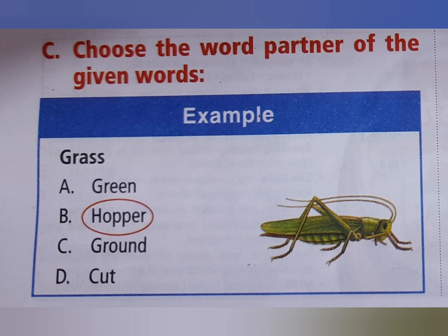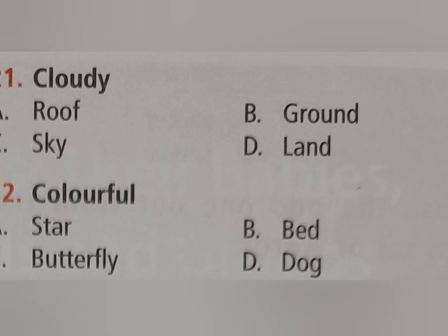Now let's do the other questions. Question one: cloudy — option A roof, option B ground, option C sky, option D land. The right answer is option C sky — cloudy sky. Second: colorful — option A star, option B bed, option C butterfly, option D dog.